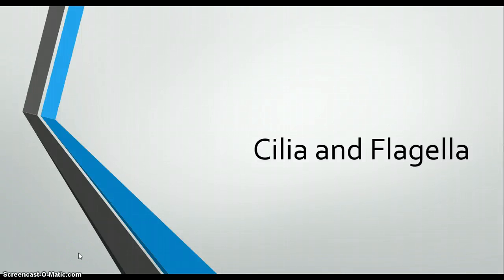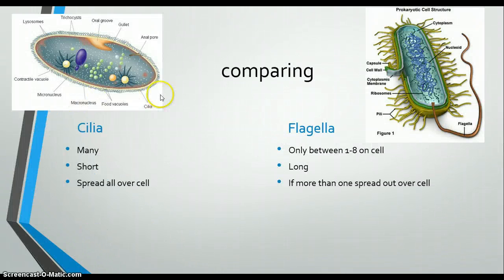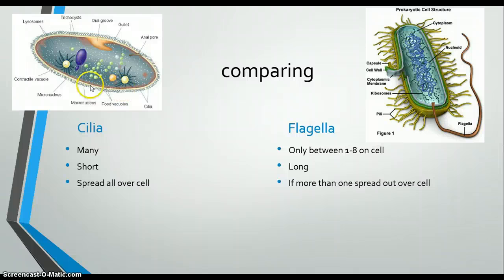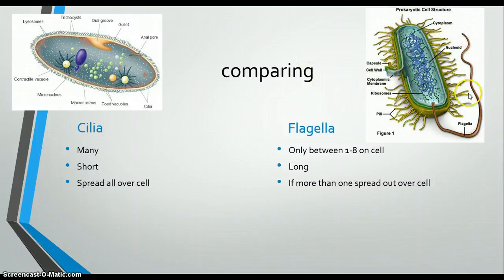So I did cilia and flagella. The cilia contains many and they are short — they are right on the edge of the cell wall. The flagella is long and there's normally only between 1 and 8. If there is more than one, they are spread very far apart on the cell.